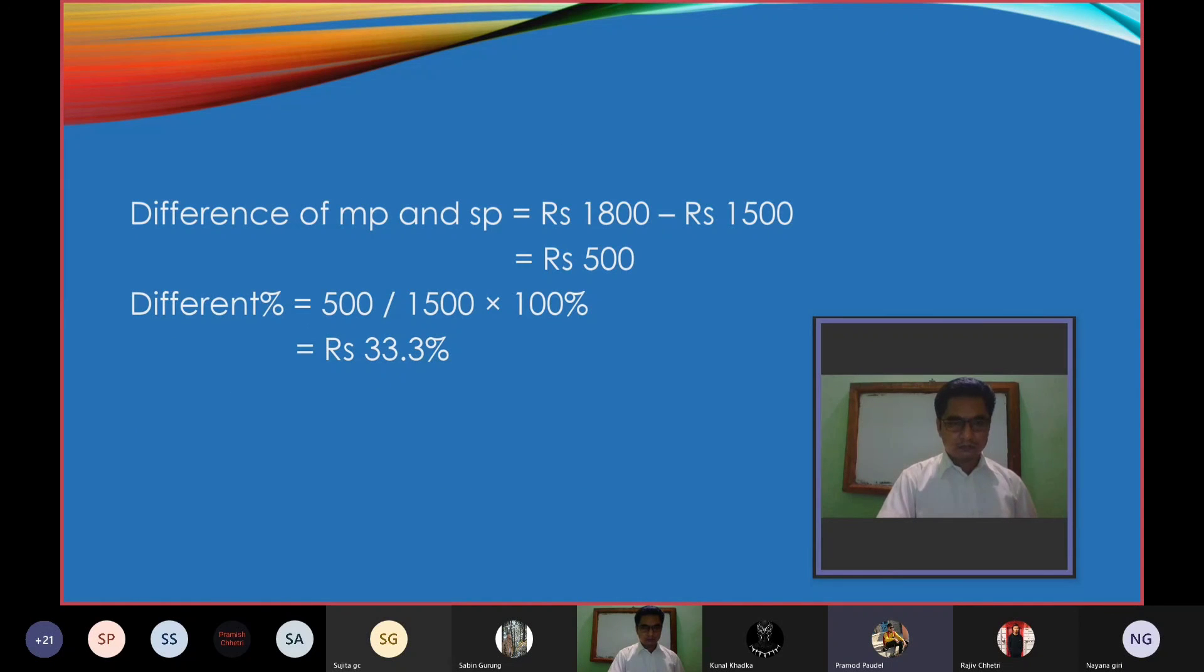The difference of MP and CP equals Rs 1,800 minus 1,500, equals Rs 300. Difference percent equals 300/1,500 multiplied by 100%, equals 20%.